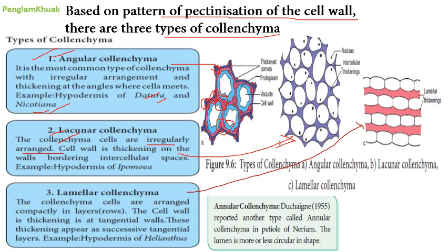Number three is lamellar colenchyma — the cells are arranged compactly in layers or rows with thickening appearing as successive tangential layers. The cell walls are very thick. This is found in the hypodermis of Helianthus (sunflower). Another type is annular colenchyma, reported in 1955, found in the petals of Nerium.